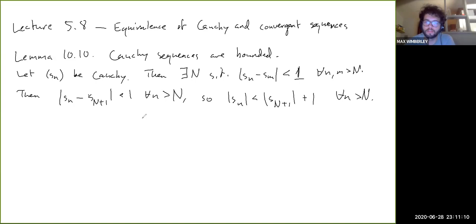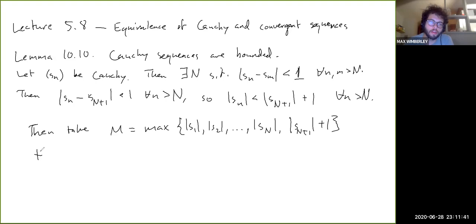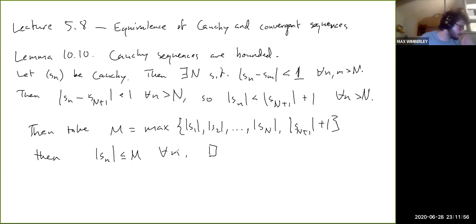We just have to deal with the first capital N terms separately. So take M to be the maximum of S_1, S_2, and so on, and then S_{N+1} + 1. Then it's clear that |S_N| ≤ M for all n. That shows that Cauchy sequences are bounded.